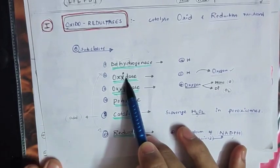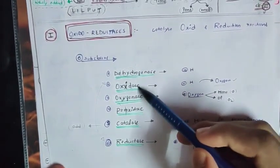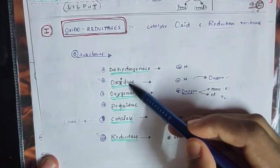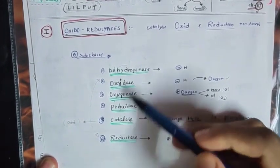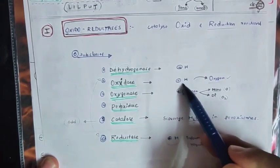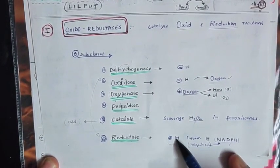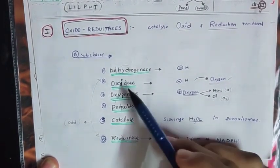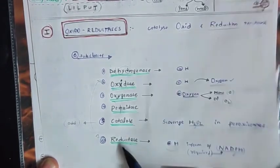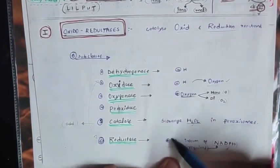Next is Oxidase. What is the difference between Oxidase and Reductase? Oxidase means removal of hydrogen or electron. Reductase means addition of hydrogen. That is the difference between these two.